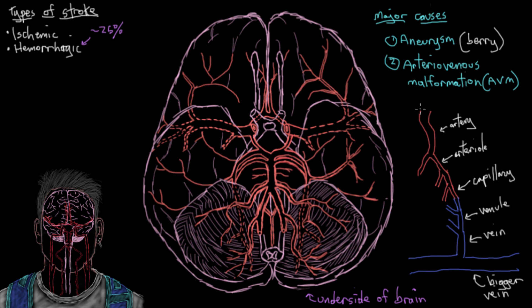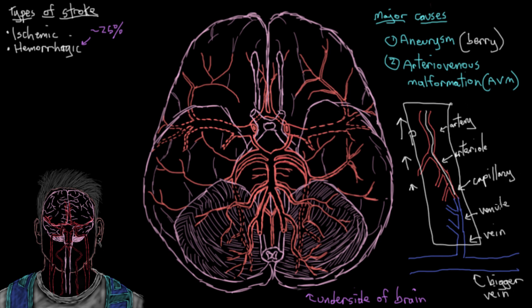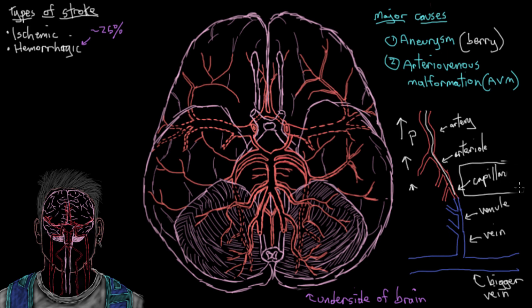Blood in the arterial system is at really high pressure, and as it progresses through the arterial system toward the capillary, pressure decreases. In the capillary it's at really low pressure — essentially the same as the venule side. Capillaries are thin and delicate; high pressure blood would rupture them. In an arteriovenous malformation, the entire capillary segment is bypassed, and arterioles are directly connected to the small veins on the other side. So blood at still really high pressures goes straight into the veins.